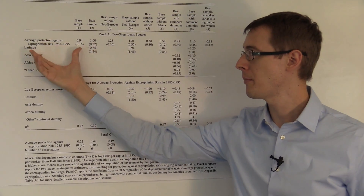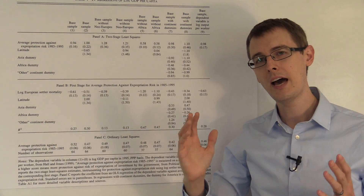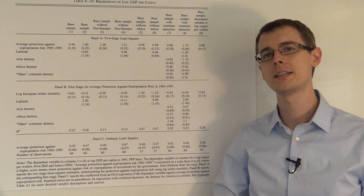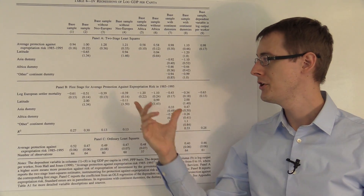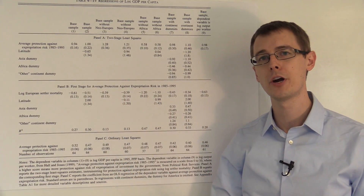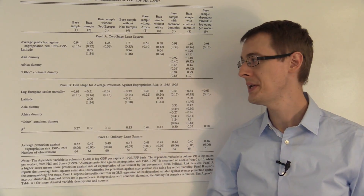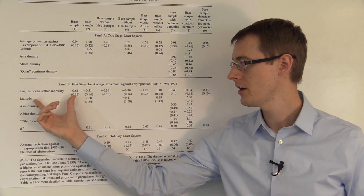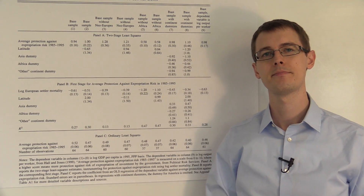They find that property rights actually do have a causal effect on economic development by using instrumental variables analysis, where their instrument is log European settler mortality.